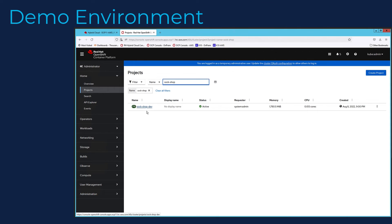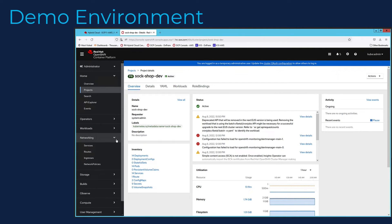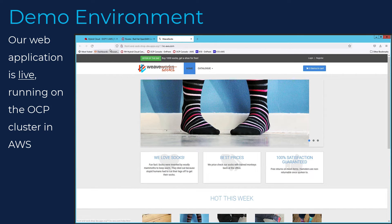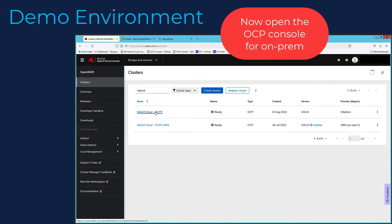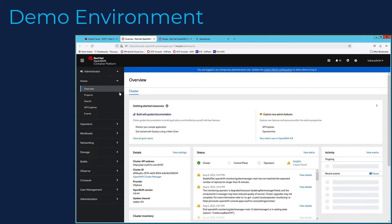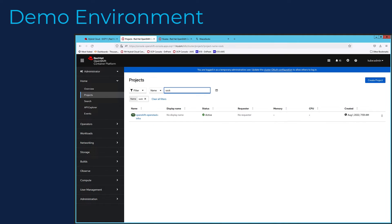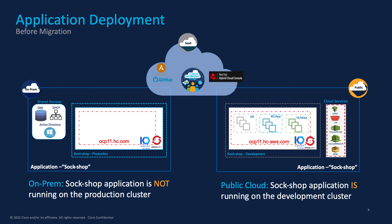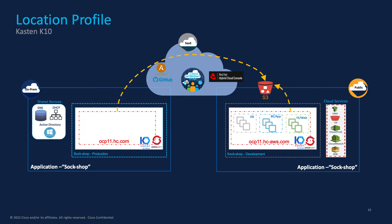Let's first navigate to the development OCP cluster in AWS. As you can see, the SockShop namespace is configured with several pods running the containerized application components. We've exposed the route to the application so users can access it from outside the cluster. Next, we navigate to the production OCP cluster running on HyperFlex and verify that the SockShop application is not running on this cluster. Now that we've verified the current status of the application in both environments, before we start the backup, restore, or migration use cases, we need to first create a location profile for each cluster from the Kasten K10 dashboard. The location profile provides K10 with access to external storage — either object store or NFS file storage — that K10 will use for backups and for enabling application migration between AWS and the on-prem Cisco HyperFlex cluster.